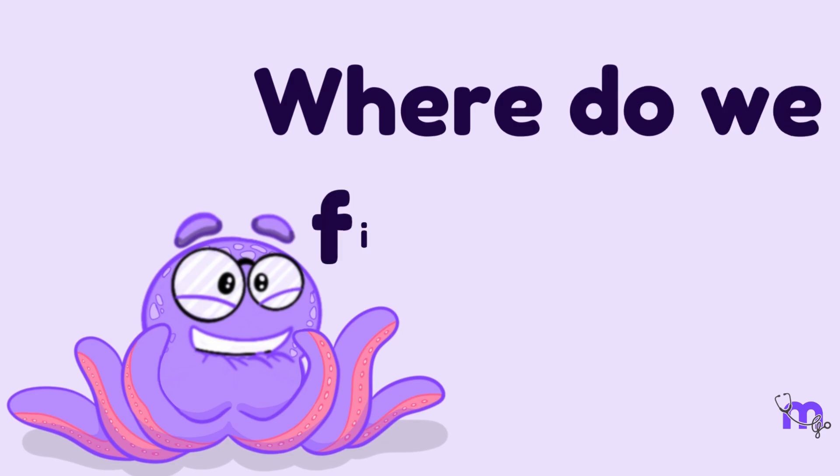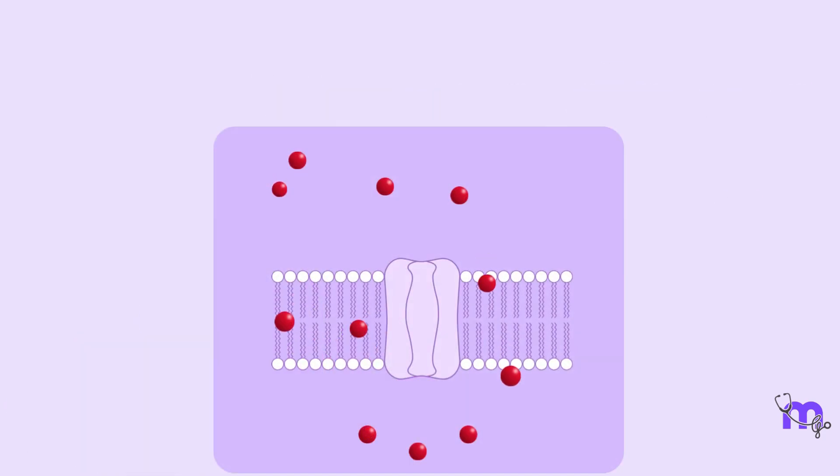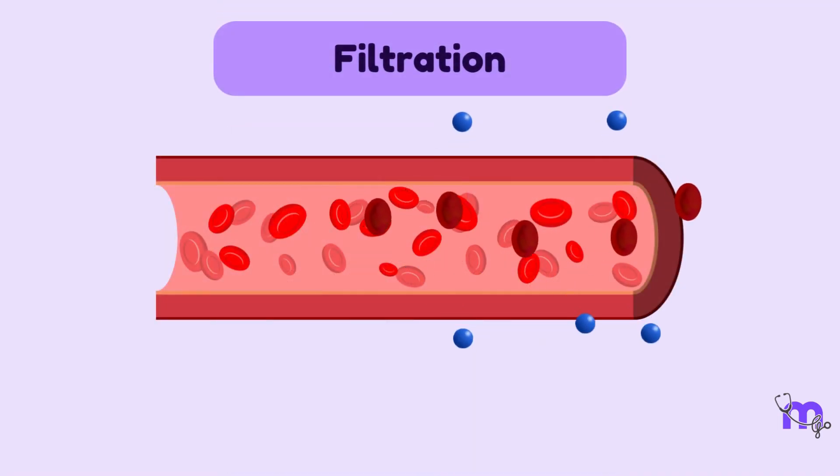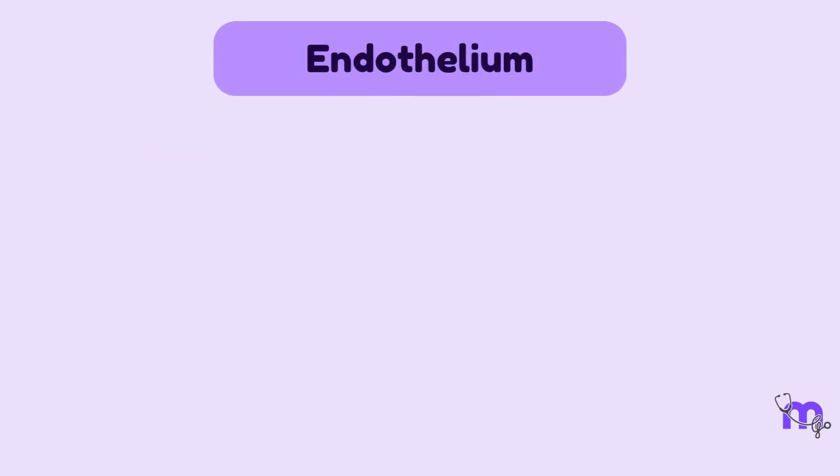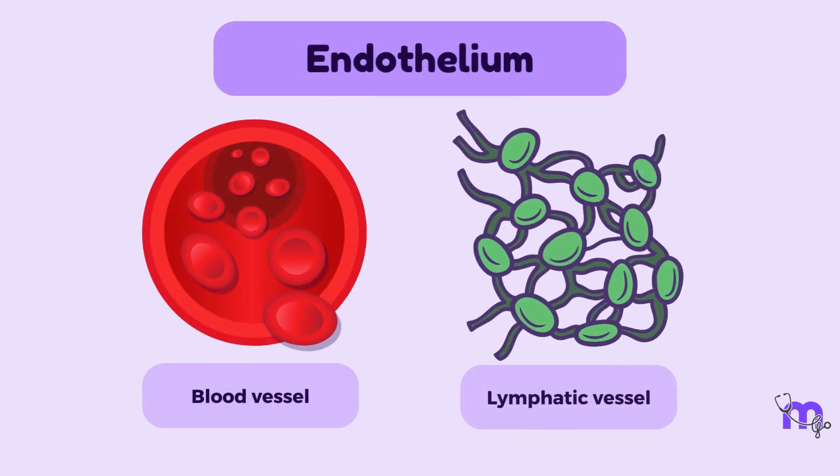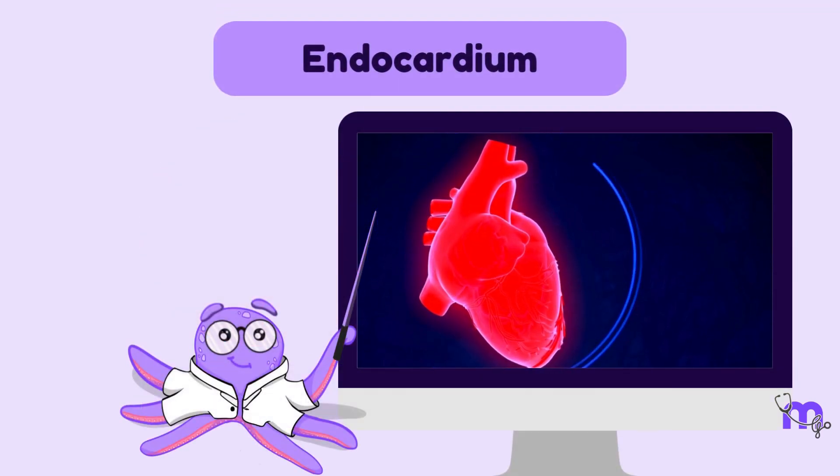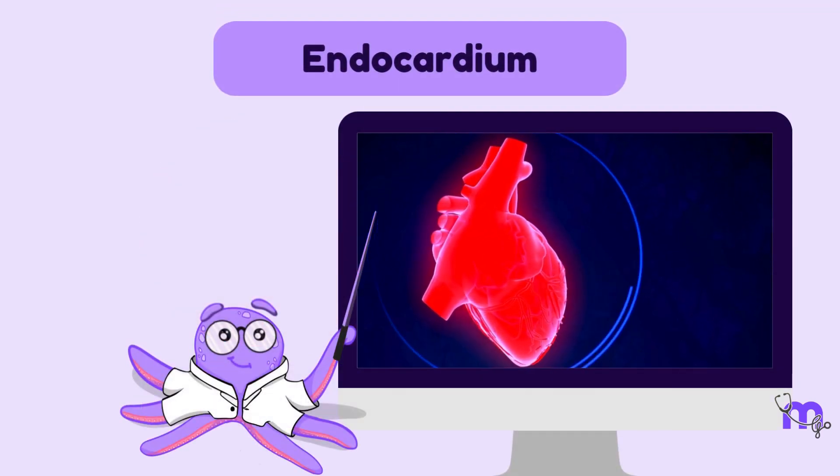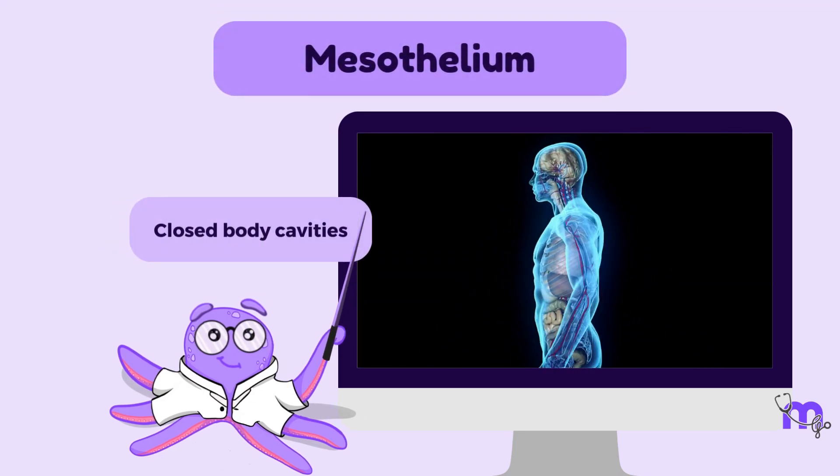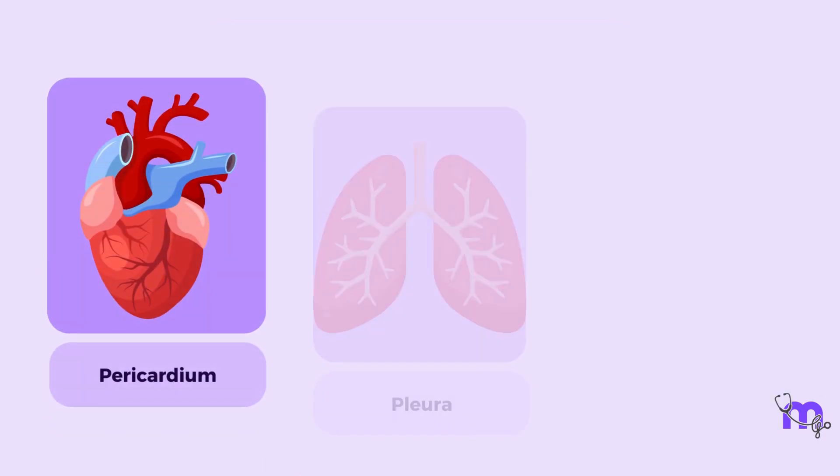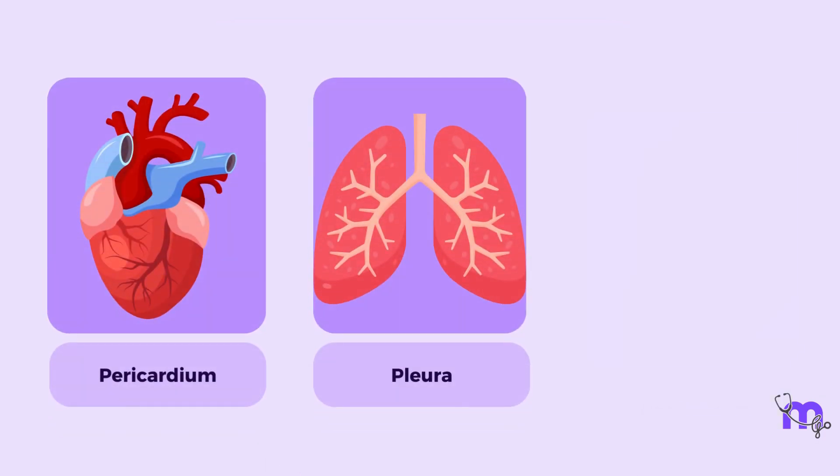So, where in the body do we find this type of epithelium? Of course, it has to be in areas where rapid and passive diffusion or filtration of small molecules is required, right? In most of them, this epithelium also gets a special name. The endothelium is the simple squamous lining of the blood and lymphatic vessels. The endocardium is the inner lining of the heart. The mesothelium is the inner lining of the coverings of closed body cavities like the pericardium of the heart, the pleura of the lungs and the peritoneum.